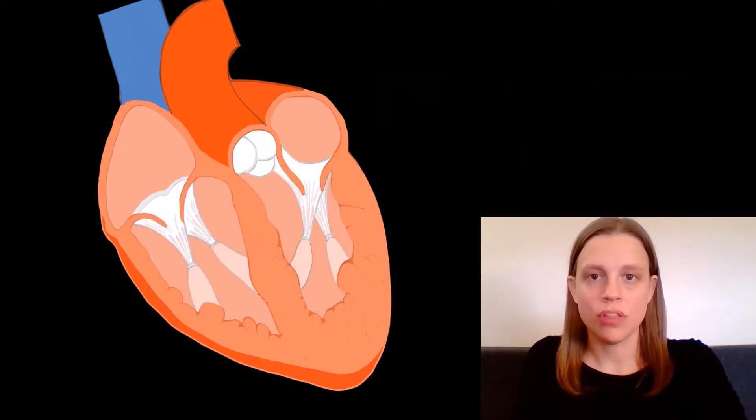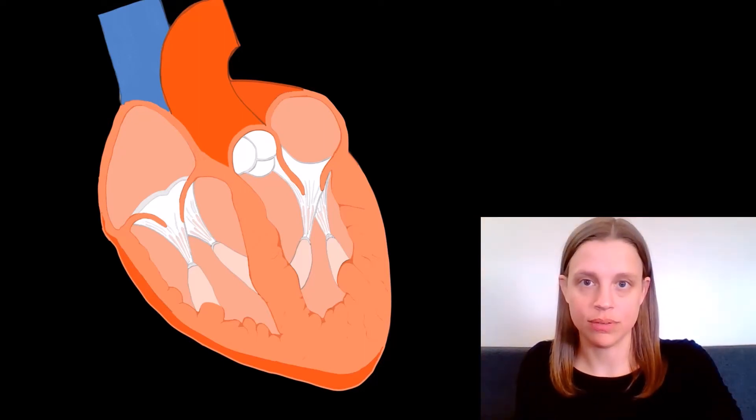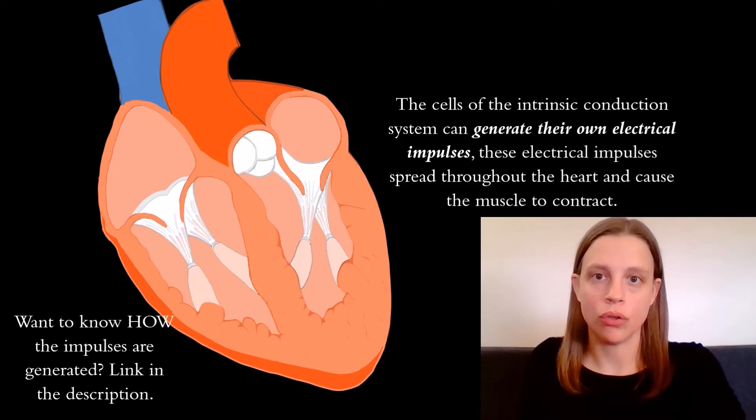The cells of the intrinsic conduction system are a type of specialized cardiac muscle cell that can generate their own electrical impulses. And these electrical impulses then spread through the rest of the heart, causing it to contract.